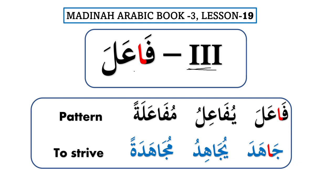In مزيد فيه, there is always one extra letter added to the root letters. In Form 3, the extra letter is Alif. Alif always comes in the middle and it never has a حركة on it — that's why we call it Alif. So فاع عين لام are the root letters, and when Alif is added it becomes فاعل.